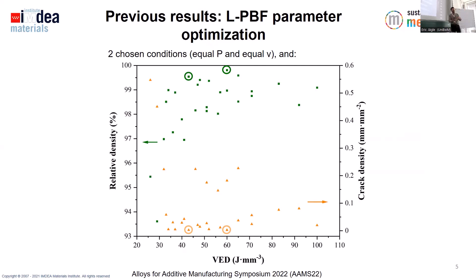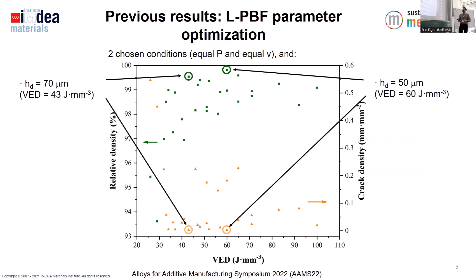These two conditions have the same laser power and the same scanning speed, and the only difference is the hatch distance. One is processed with a hatch distance of 70 microns and a volumetric energy density of 43 J/mm³, and the other one has a hatch distance of 50 microns. From now on, I will call these conditions 70 and 50, or just 50 micron and 70 micron.